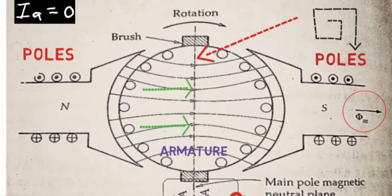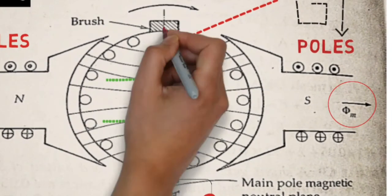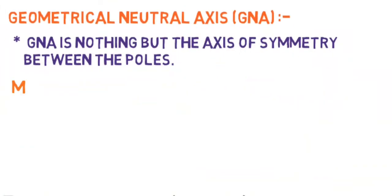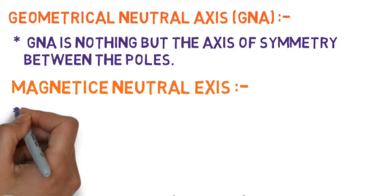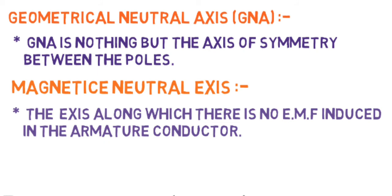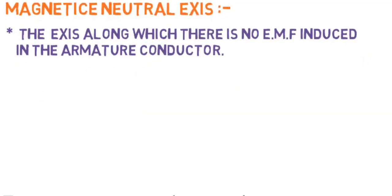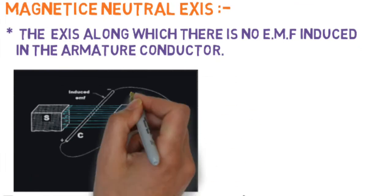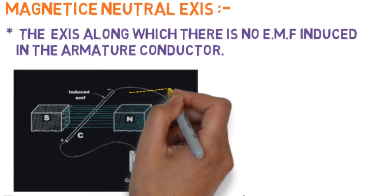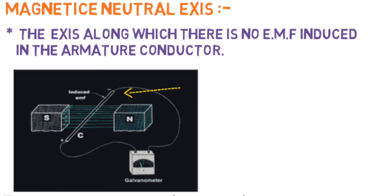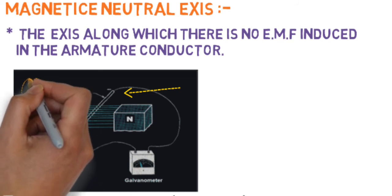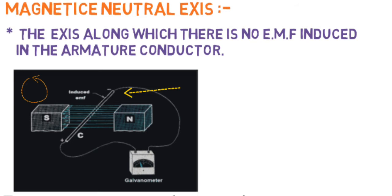The GNA divides the north and south poles equally and is always at the center. The MNA (magnetic neutral axis) is the axis along which no EMF is induced in the armature conductors. From Faraday's law of electromagnetic induction, when a conductor is placed in a magnetic field and rotates, only those conductors that move and cut field flux have EMF induced in them.